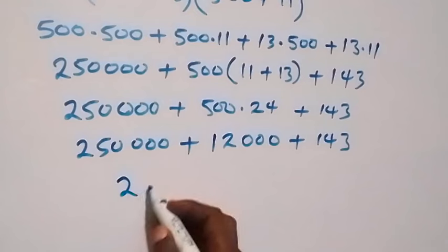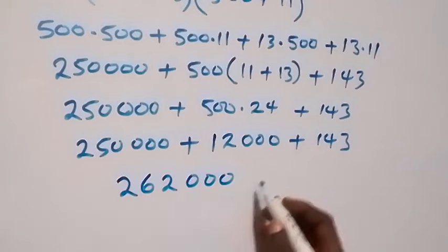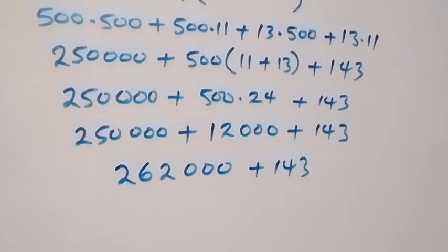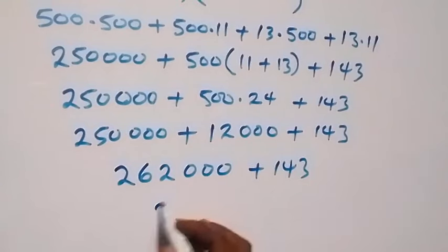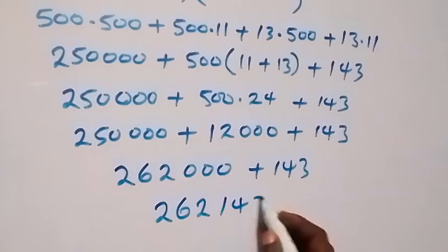Then, we have 262,000. Here. Then, plus 143. So, this gives us 262,000. Then, plus 143.